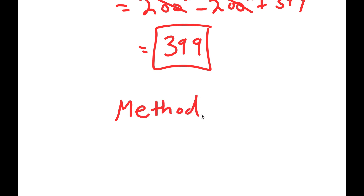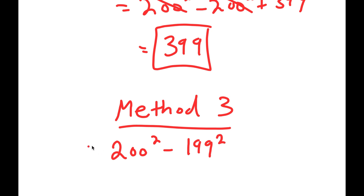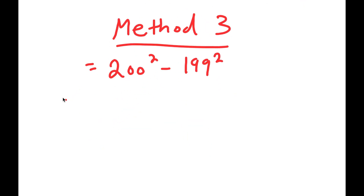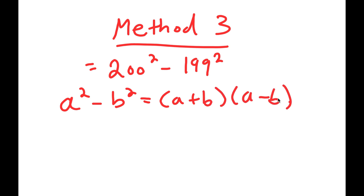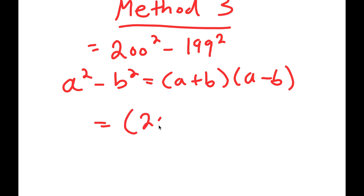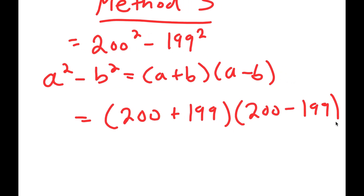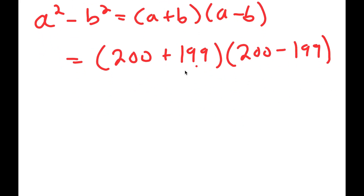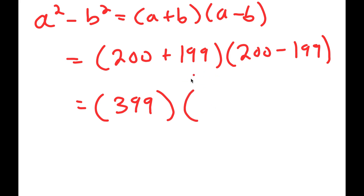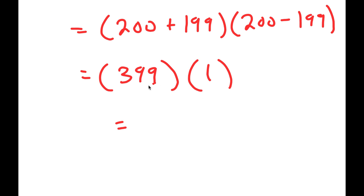For my third and final method, I have 200 squared minus 199 squared. This time I'm not going to change either term — I'm just going to directly use the algebraic property that states a squared minus b squared equals a plus b times a minus b. So this turns into 200 plus 199, times 200 minus 199. Now, 200 plus 199 equals 399, and 200 minus 199 is simply 1. So I get 399 times 1, and obviously anything times 1 is itself, so this results in 399.